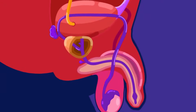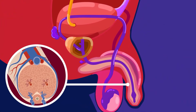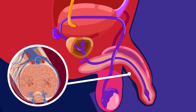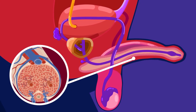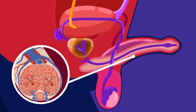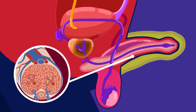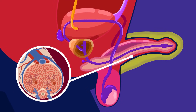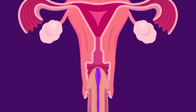When a man becomes sexually aroused, blood is pumped into the penis faster than it can return to the venous bloodstream, and so it fills the spaces in the spongy tissues of the penis. This causes the penis to become stiff and erect and allows it to enter the vagina of the woman.